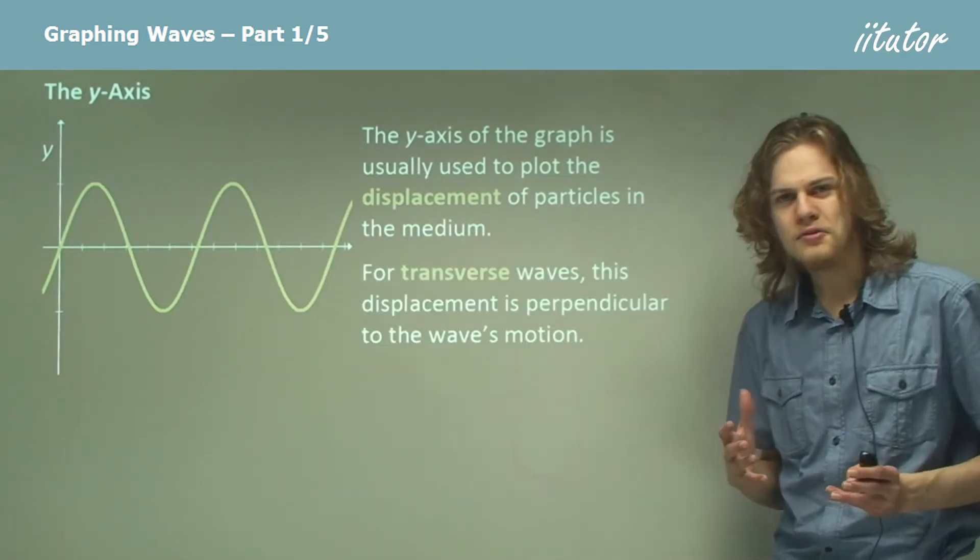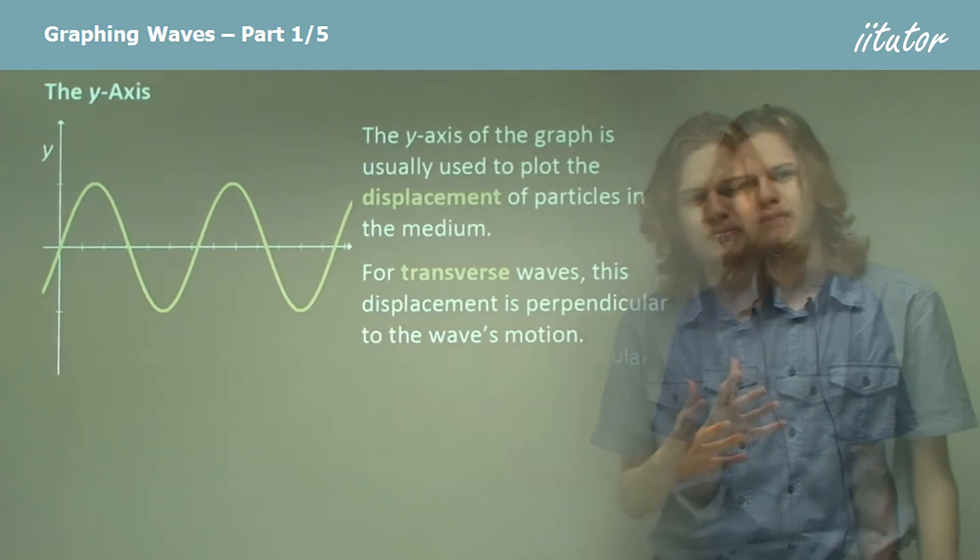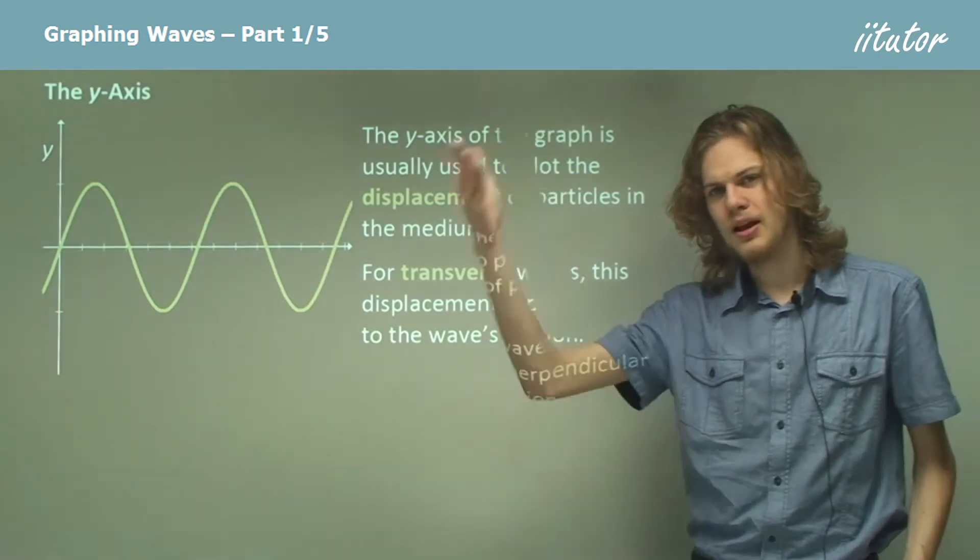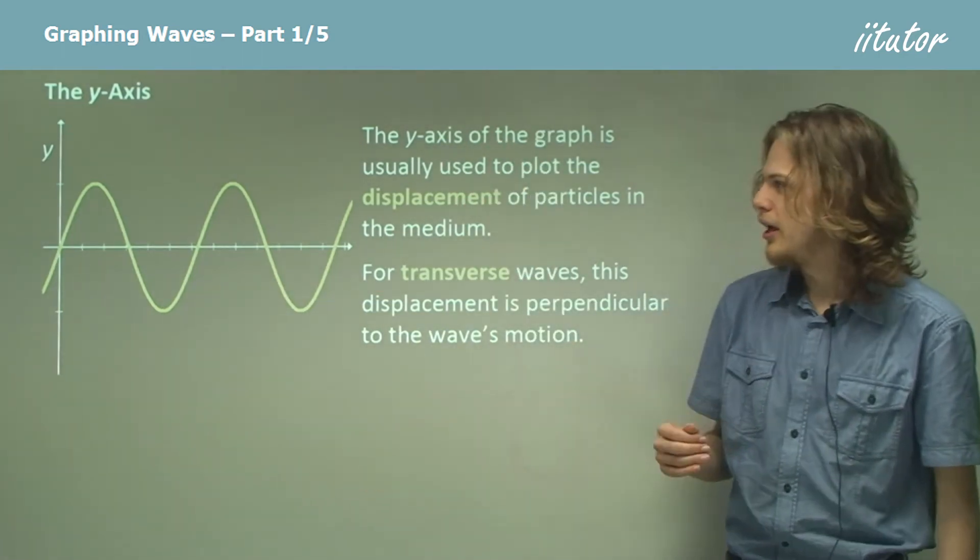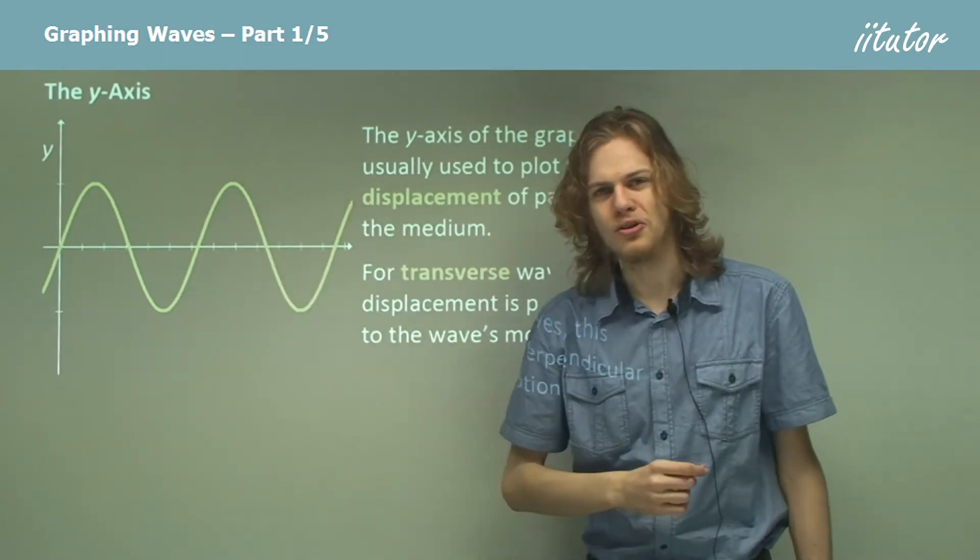So for transverse waves this means that the graph will look a bit like the transverse wave. The transverse waves are the ones that move up and down as they go across, and we can see that if we graph their displacement it will also go up and down as the graph moves across.